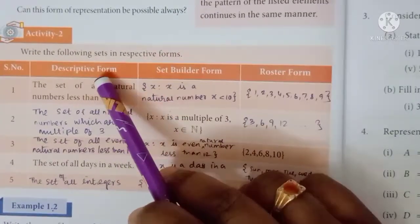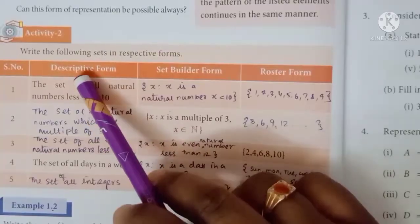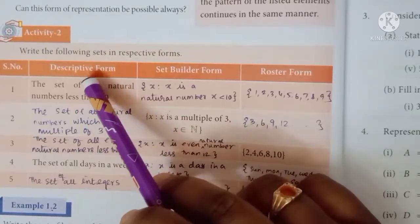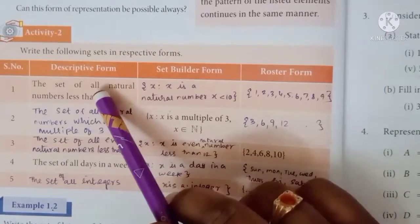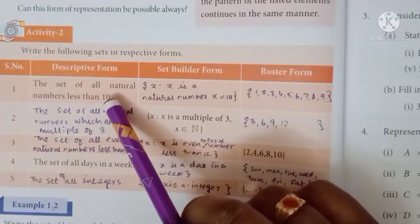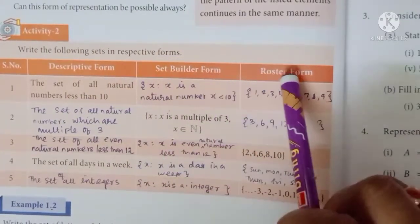So write the following sets in respective forms. This is the descriptive form. This is the set builder form. And this is the roster form. The first descriptive form is: the set of all natural numbers less than 10.